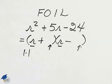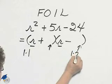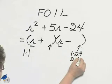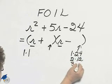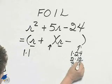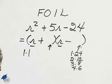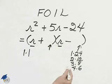24, regrettably, has several ways of factoring. It could be 1 and 24, it could be 2 times 12, it could even be 3 times 8, or it could be 4 times 6. But of the possibilities, the one whose difference is 5 will be this 3 and 8.